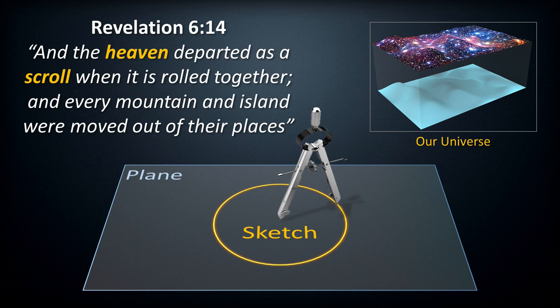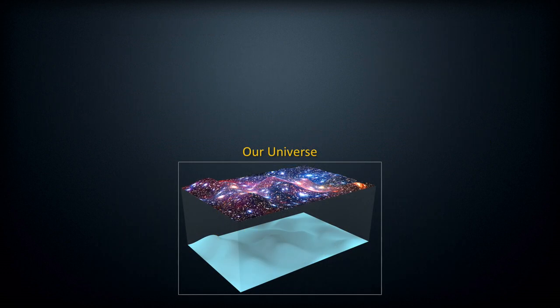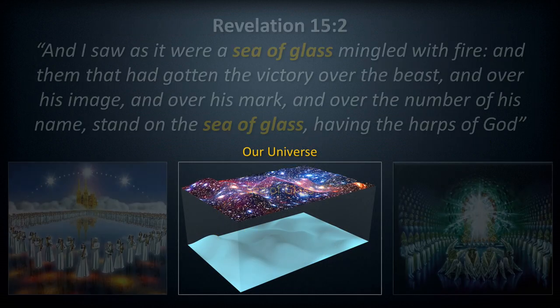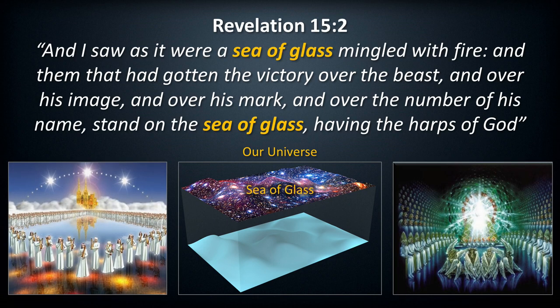Revelation 6:14 states: 'The heaven departed as a scroll when it is rolled together.' The heaven here is being described as a flat scroll that is eventually rolled up — a curled-up dimension, a concept the brightest minds of our generation are just now coming to grips with. In the world of quantum physics this scroll is called a membrane. Some theories suggest that our entire universe exists on a single membrane, these membranes acting as boundaries separating one dimension from another — or higher dimensions from lower dimensions, perhaps even one universe from another. The sea of glass mentioned in Revelation 15:2 is a perfect example of a dimensional plane. The sea of glass acts as a boundary between our universe and the higher multiverse — it is the glass dome seen in ancient Hebrew depictions of cosmology.